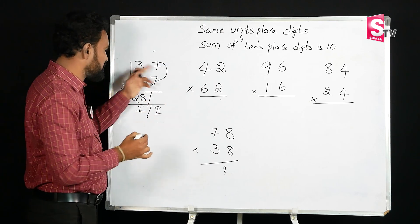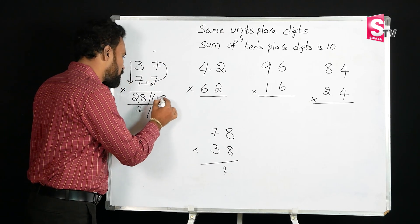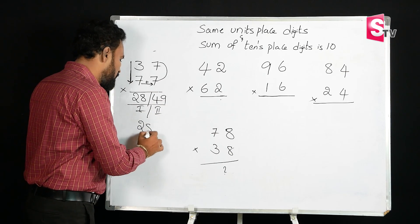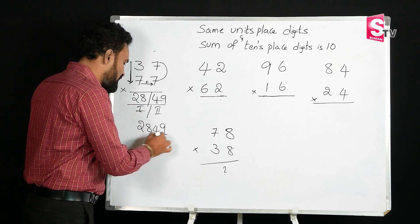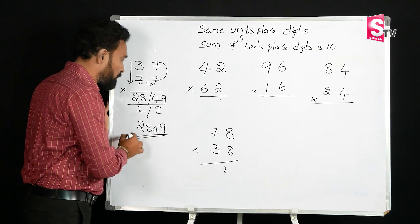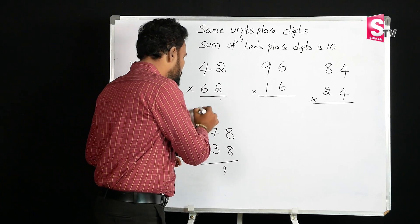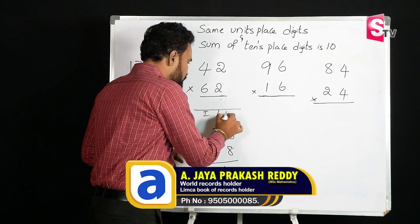For the second part, we multiply the ones digits: seven sevens are 49. So our final answer is 2849.